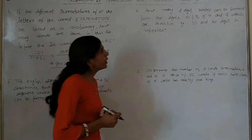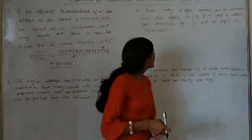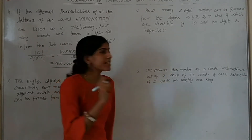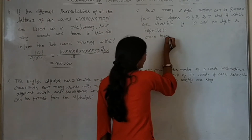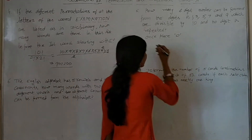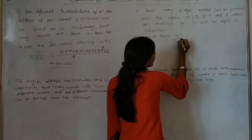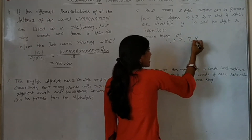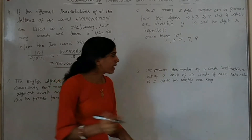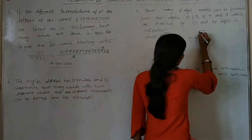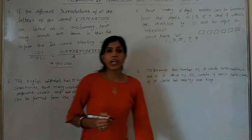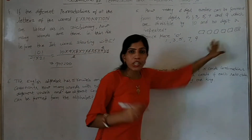Question number 5: How many six-digit numbers can be formed from the given digits which are divisible by 10 and no digit is repeated? Divisible by 10 tab hoga jab units place pe 0 fix karenge. 1s place fix ho gaya hamara — 0. Toh humare paas digits kitne rah gaye? 5 digits: 1, 3, 5, 7, 9. 6-digit mein se 0 fix hai, baaki 5 digits bach gayi. Toh kya banega? 5 factorial.